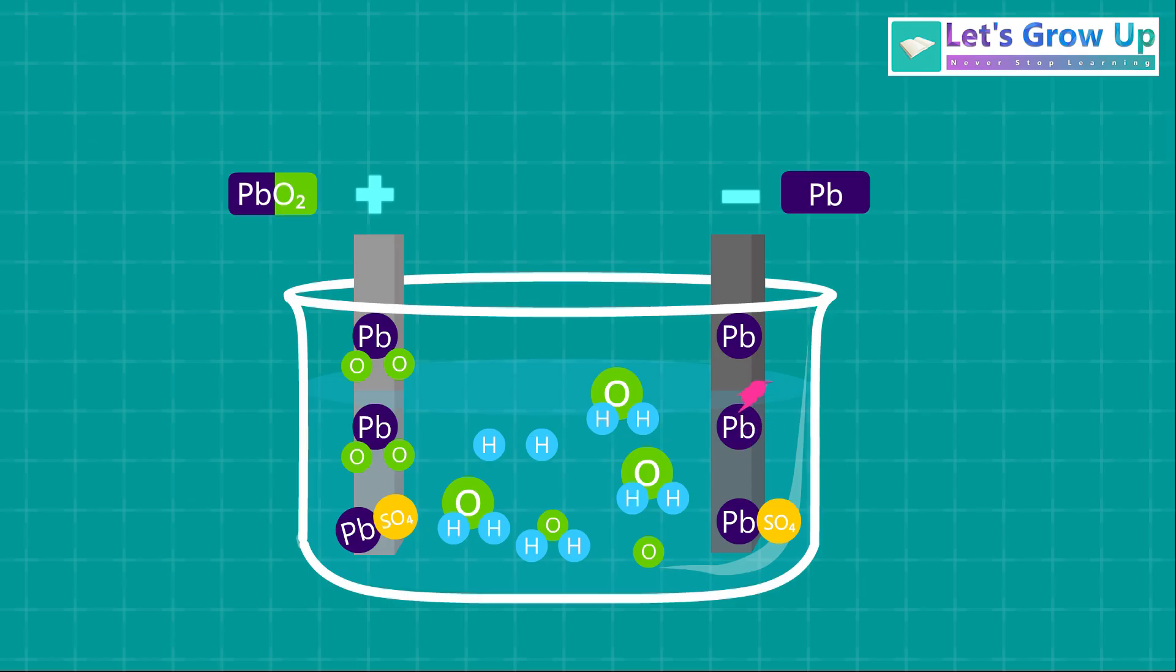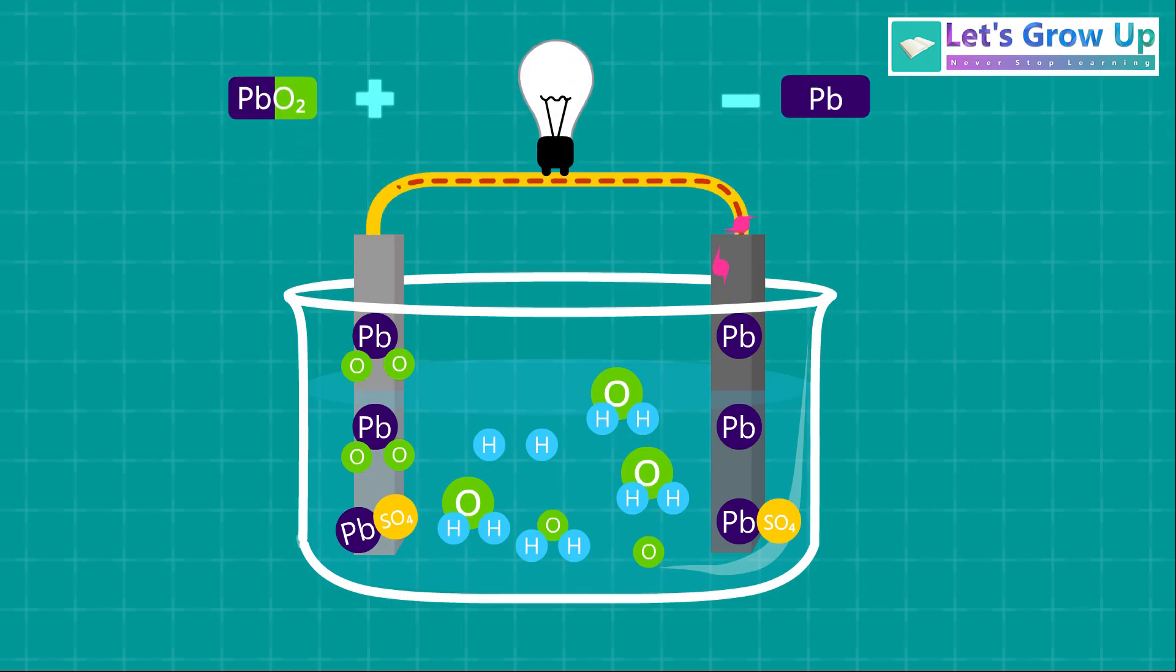In this process, the lead loses two electrons. These released electrons then flow through the external circuit from the negative terminal towards the positive terminal. This flow of electrons is what we utilize as electricity.